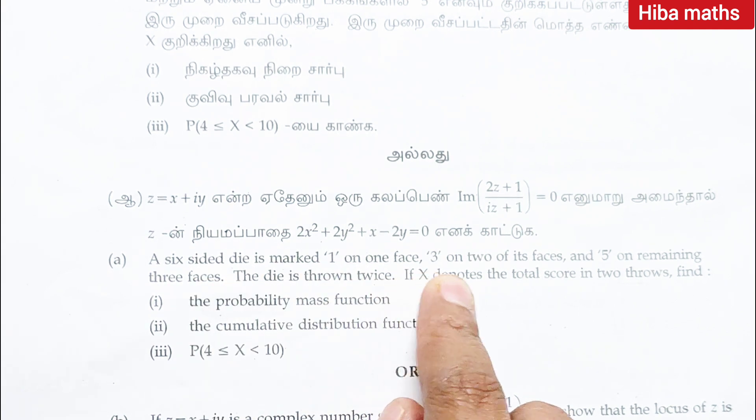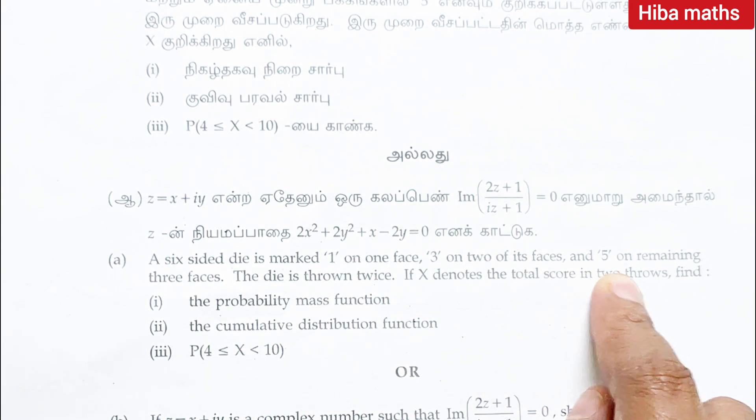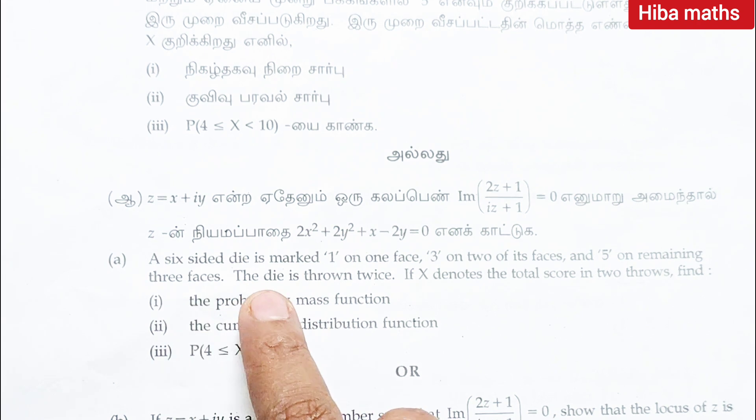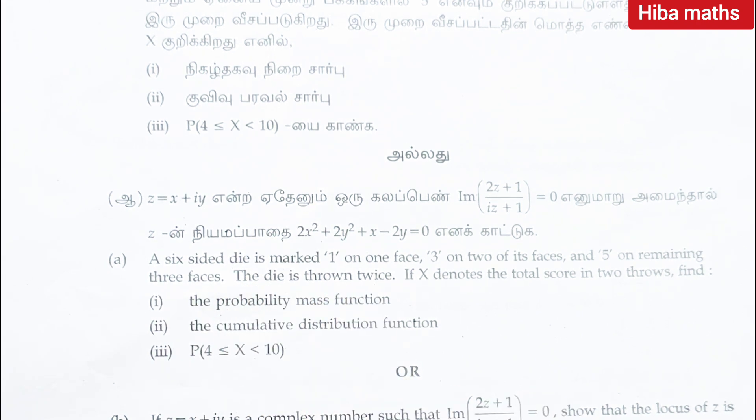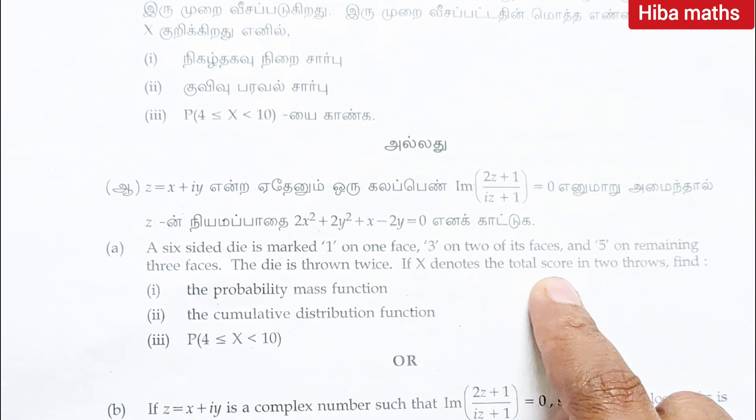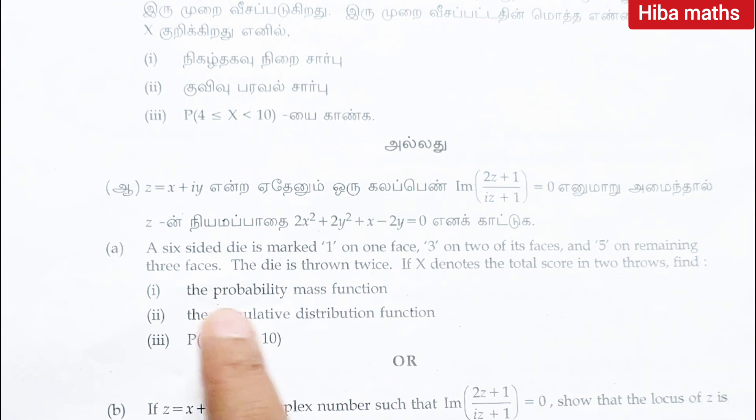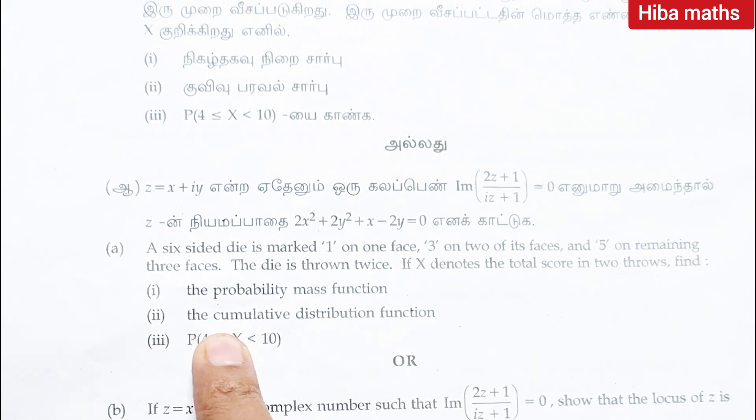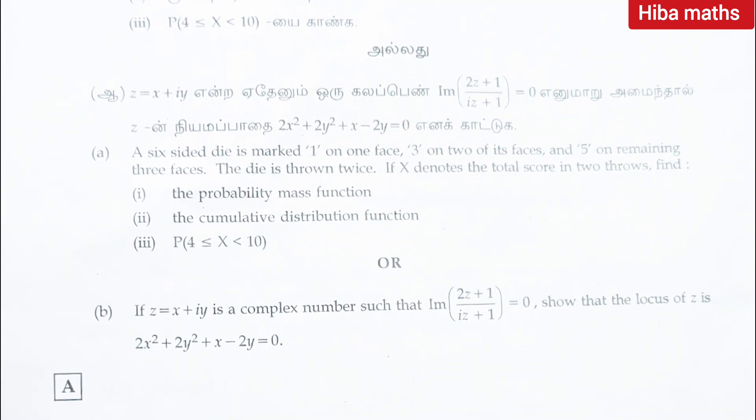Question 42: a six sided die is marked 1 on one face, 3 on two of its faces and 5 on remaining three faces. The die is thrown twice. If x denotes the total in two throws, find the probability mass function, the cumulative distribution function, and P of x greater than or equal to 4 and less than 10.